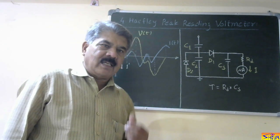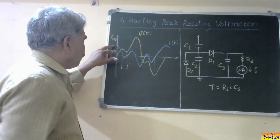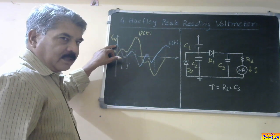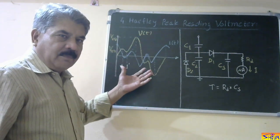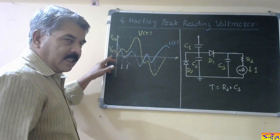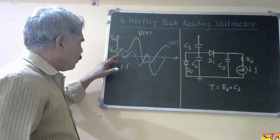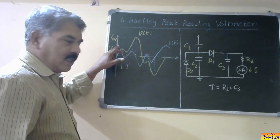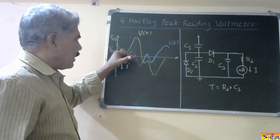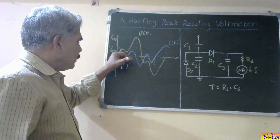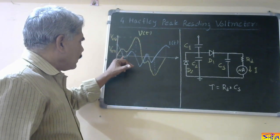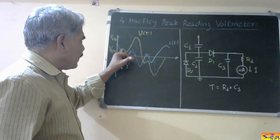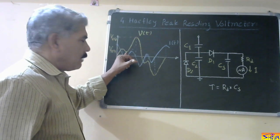Now let us see how this error arises. Consider the current waveform. When voltage is zero, current is at its peak value, assuming the current is capacitive in nature, so current is leading the voltage by 90 degrees. When voltage is zero, current is at peak value. Now as voltage is increasing, current is reducing. At this false maxima Vm2, the current will become zero. Then again it will increase in the negative direction. Now this minima comes after the false maxima.